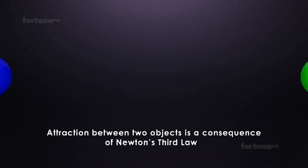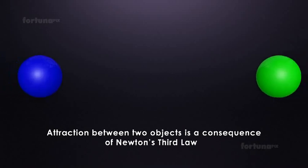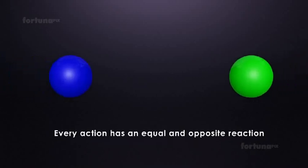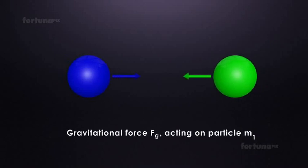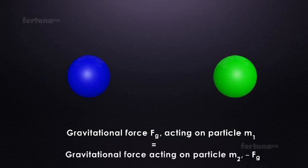The attraction between two objects is a consequence of Newton's third law, which states that every action has an equal and opposite reaction. In this case, the gravitational force Fg acting on particle M1 is equal and opposite to the gravitational force acting on particle M2, minus Fg.